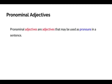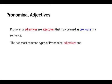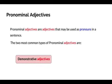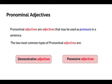Pronominal adjectives are adjectives that may be used as pronouns in a sentence. Pronominal adjectives modify the nouns immediately after them. The two most common types of pronominal adjectives are demonstrative adjectives and possessive adjectives. Let's look at some examples of both types.